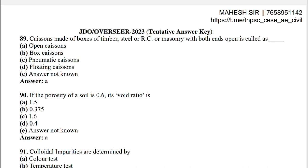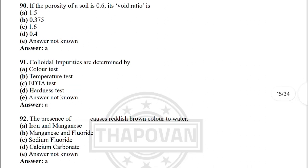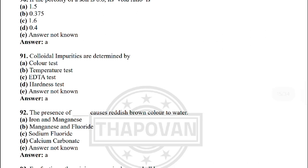Next: caissons made of a box of timber, steel or masonry with both ends open are called — the correct answer is option A: open caissons. Next: if the porosity of the soil is 0.6, the void ratio is — the correct answer is option A: 1.5.